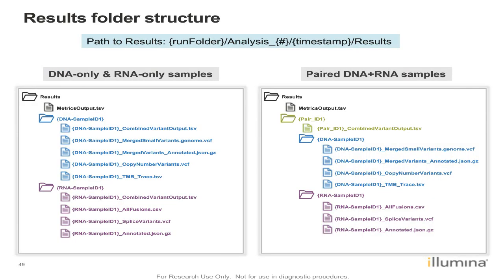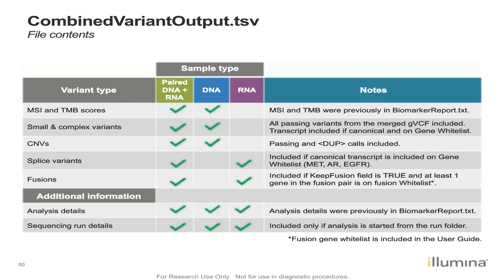To find your files, you'll see an analysis folder within the run folder or wherever you've set your output. Within results, you'll have the metric output file. If you ran DNA only or RNA only, you'll see the DNA results or RNA results folder. If you ran a paired analysis, you'll have a pair folder containing your combined variant output file as well as your individual DNA and RNA results. The MSI and TMB scores are in the DNA or paired report; small and complex variants also in DNA or paired; CNVs also in DNA or paired; splice variants and fusions are from RNA analysis and appear in an RNA report or paired report.